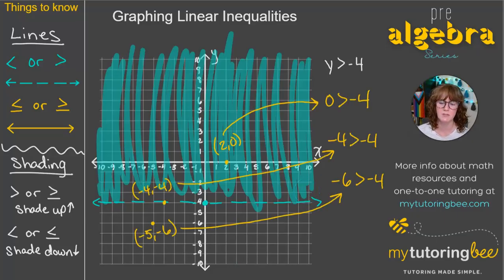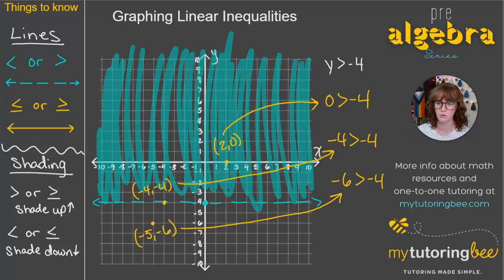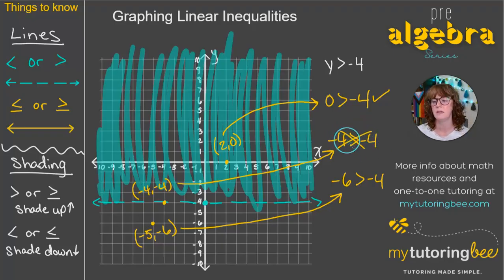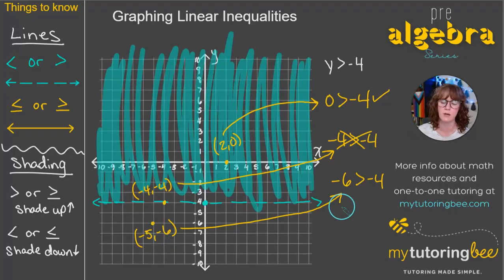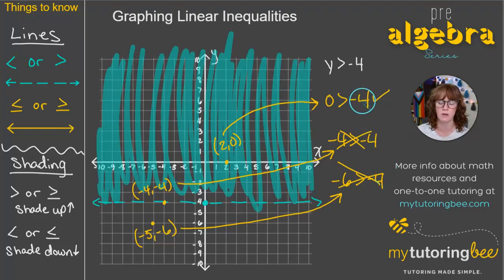For the test points on this example, we don't have an x in the original inequality, so we only substitute the y-coordinate. Testing y = 0: 0 is greater than negative 4 — that checks out. Testing y = negative 4 on the line: negative 4 is greater than negative 4 — not quite, it's equal. And y = negative 6 in the unshaded area: negative 6 is not greater than negative 4. Any point in the shaded area is part of the solution set.